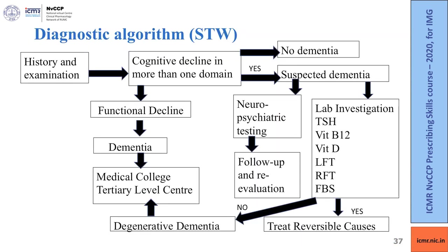The algorithm for treating a patient with dementia: take history, do a detailed physical examination, and determine whether there is cognitive decline in more than one domain. If no, the patient is not suffering from dementia. If yes, suspect dementia.